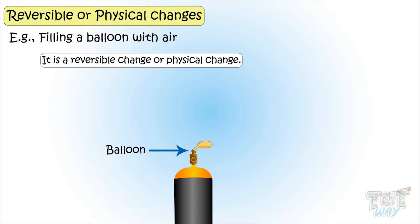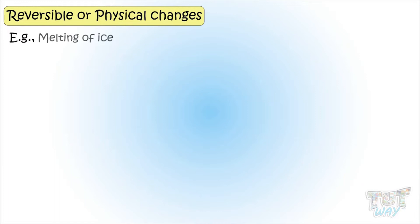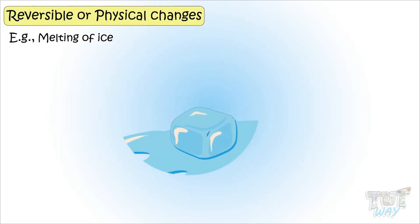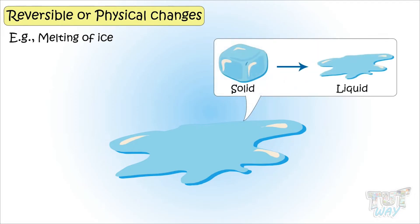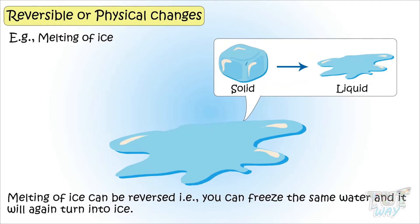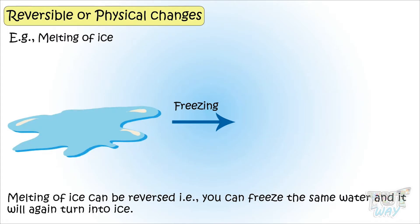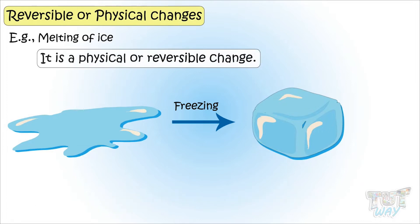Let's take another example of a physical or reversible change — melting of ice. Here we have a cube of ice. Let it stay for some time and it will melt, so it's changed from solid state to liquid state. But this change can be reversed: you can freeze the same water and it will again turn into ice. So melting is a physical or a reversible change.